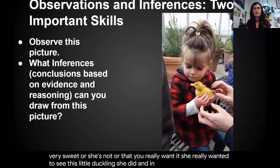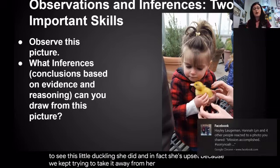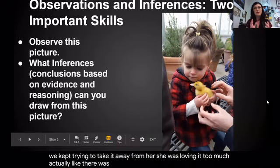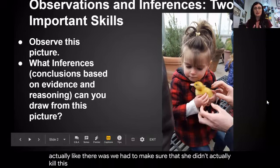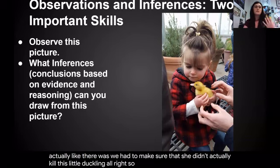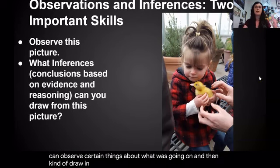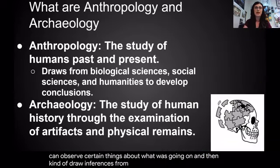She did actually want to see the duckling, and she was upset because we kept trying to take it away from her. She was loving it too much — we had to make sure she didn't actually hurt the little duckling. So just from observation, we can observe certain things about what was going on and then draw inferences from that.